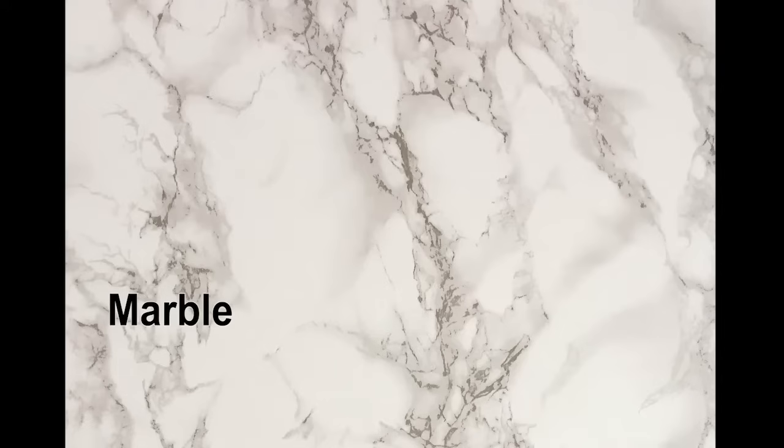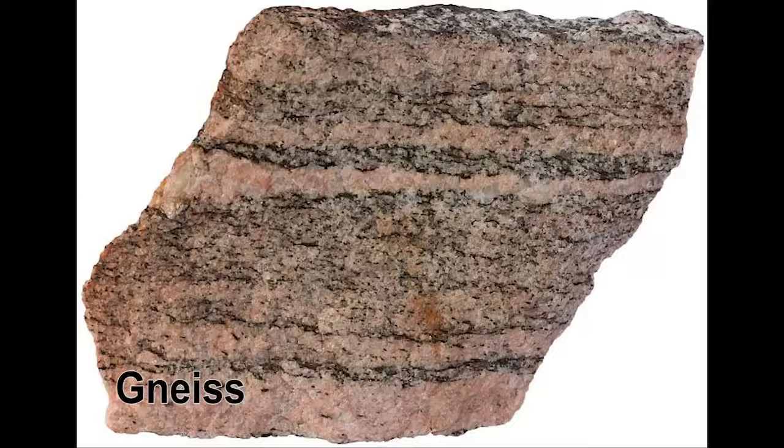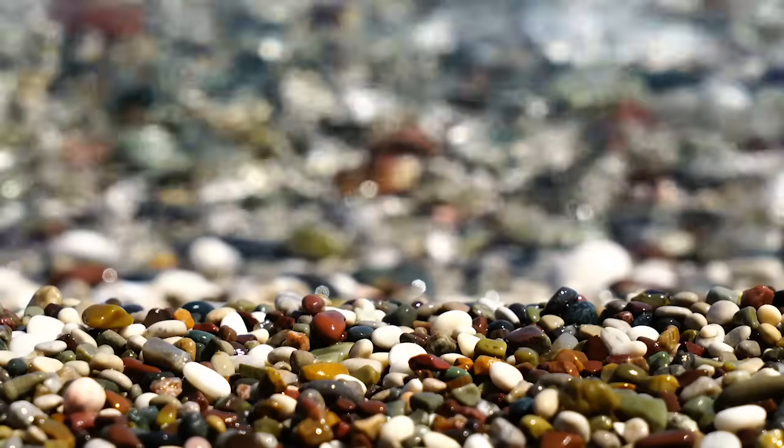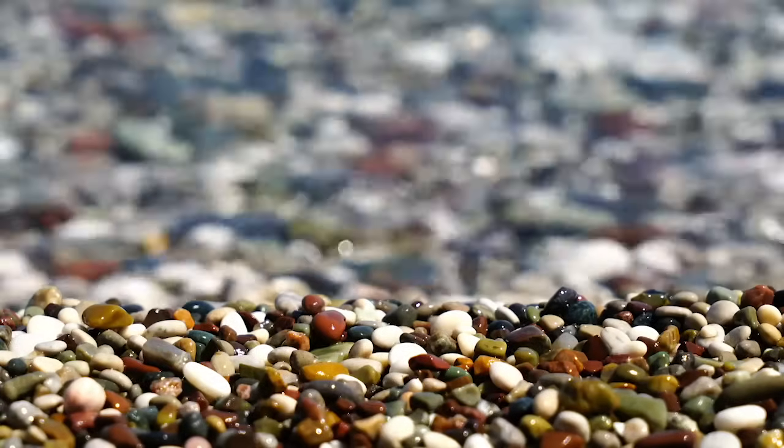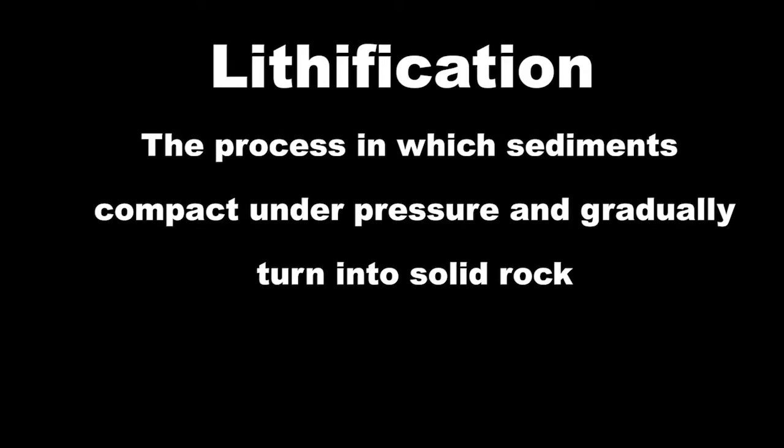Examples include marble, schist, and gneiss. And these rocks also make really good geology jokes. Lastly, sedimentary rocks are formed from pre-existing rocks or once-living organisms. When rocks like granite undergo physical or chemical weathering, they are broken down into discrete or small sedimentary grains. When these grains accumulate on the earth's surface, they undergo a process called lithification, when these grains compact and harden into sedimentary rocks.